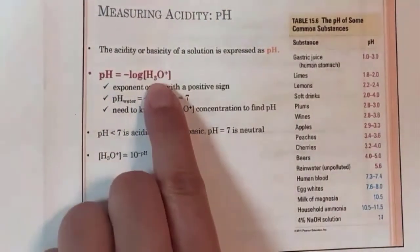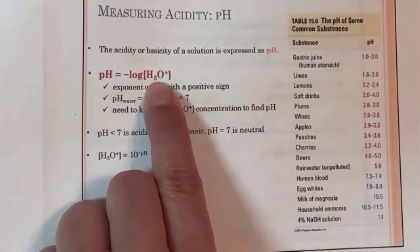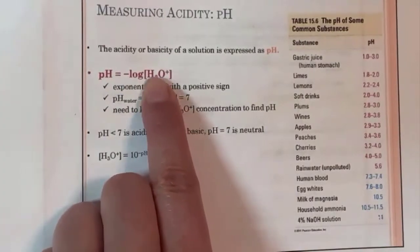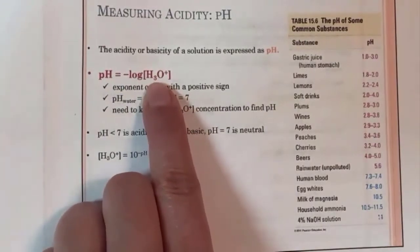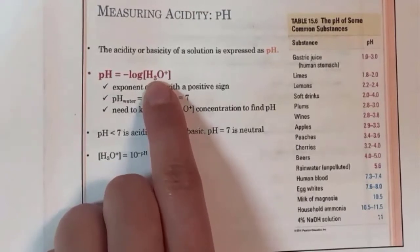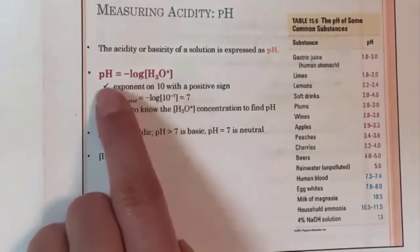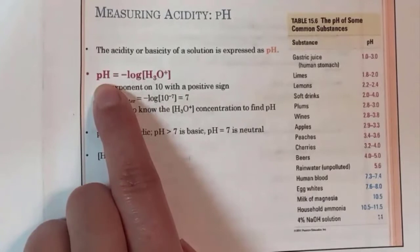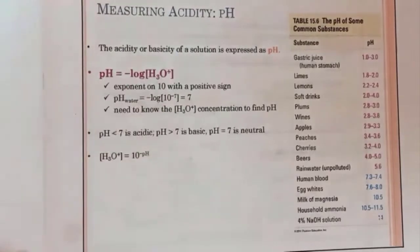Remember the concentration of H₃O⁺ for neutral — which we call pH 7 — was 1.0×10⁻⁷, and that's only for 25 degrees. So pH 7 for neutral only is true for 25 degrees.